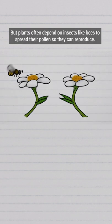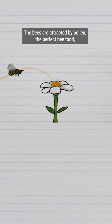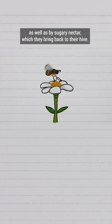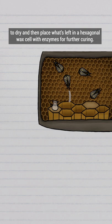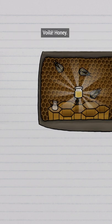But plants often depend on insects like bees to spread their pollen so they can reproduce. The bees are attracted by pollen, the perfect bee food, as well as by sugary nectar, which they bring back to their hive. House bees hold the nectar out on their tongues to dry, and then place what's left in a hexagonal wax cell with enzymes for further curing. Voila. Honey.